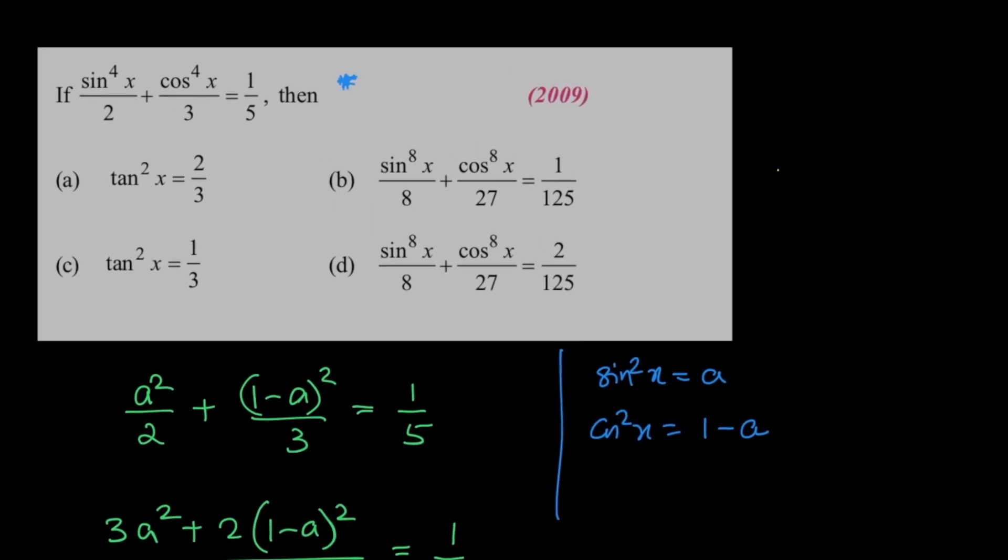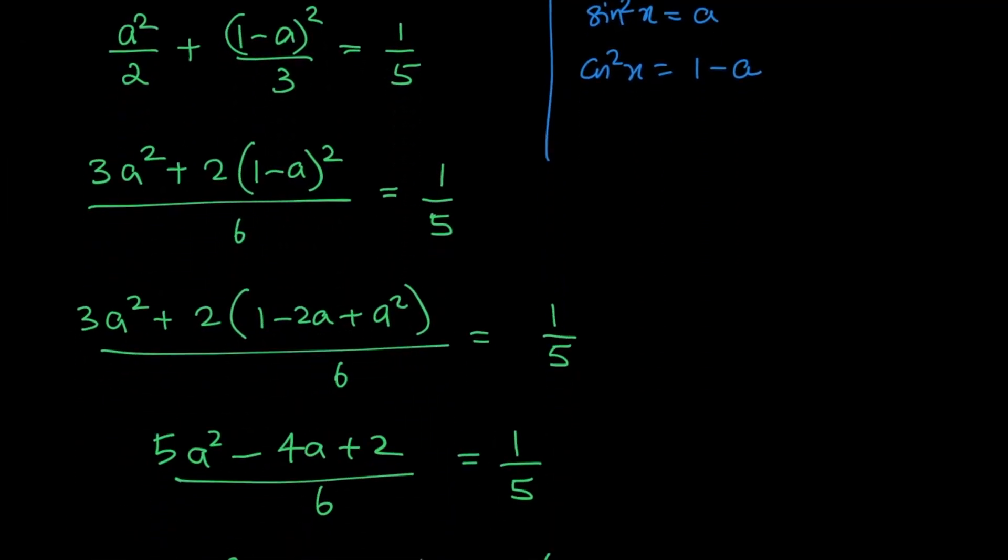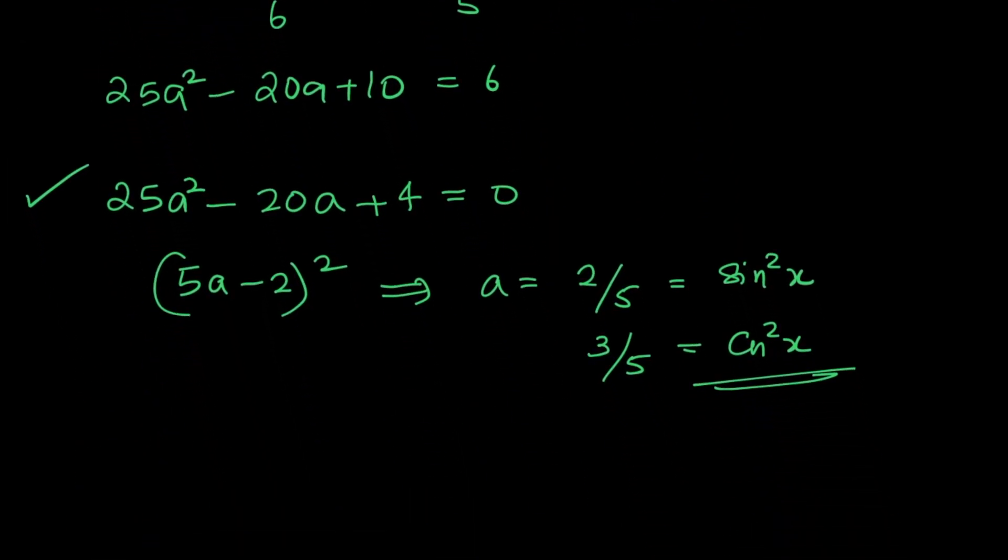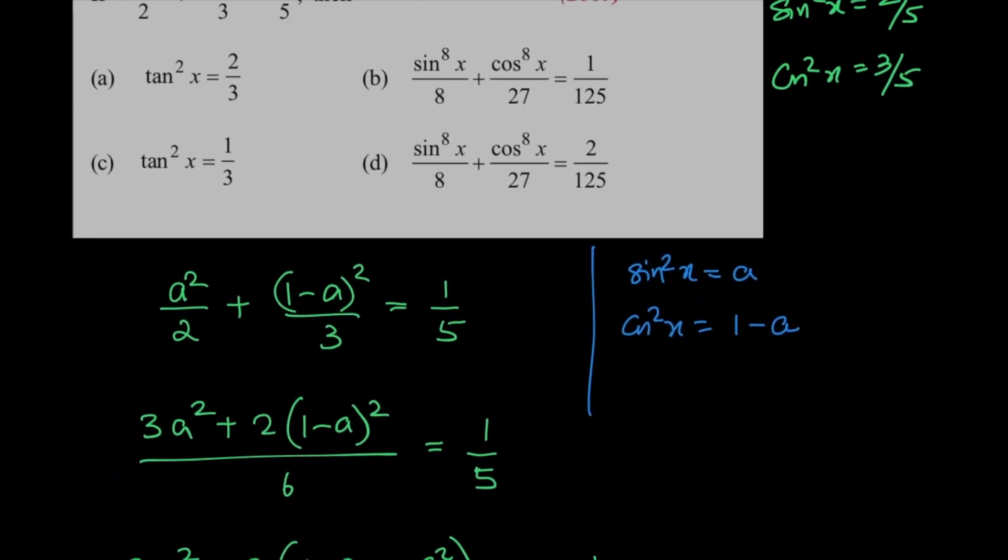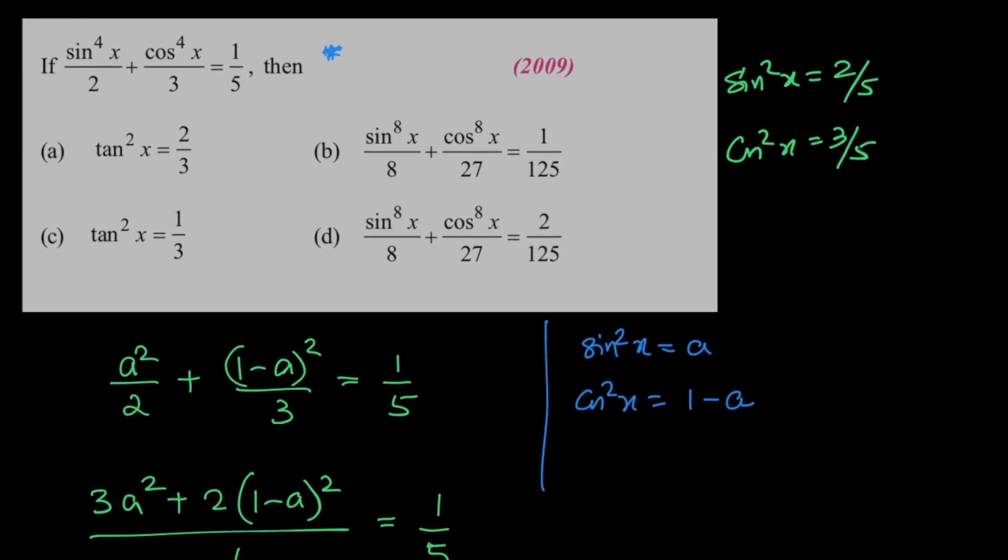So we have sin square x is equal to 2 by 5 and cos square x is equal to 3 by 5. So tan square x becomes 2 by 3. So this is wrong.